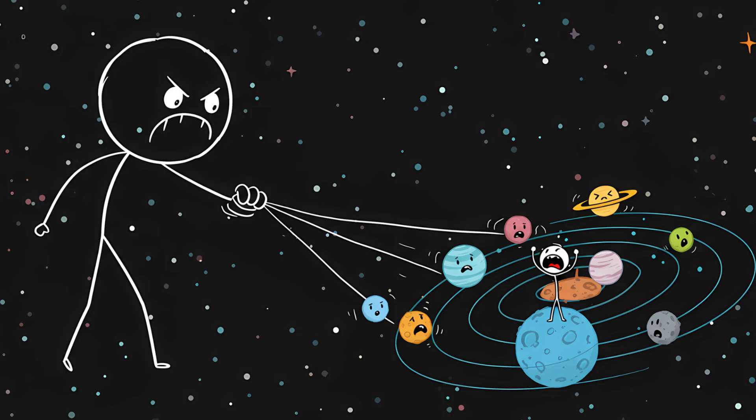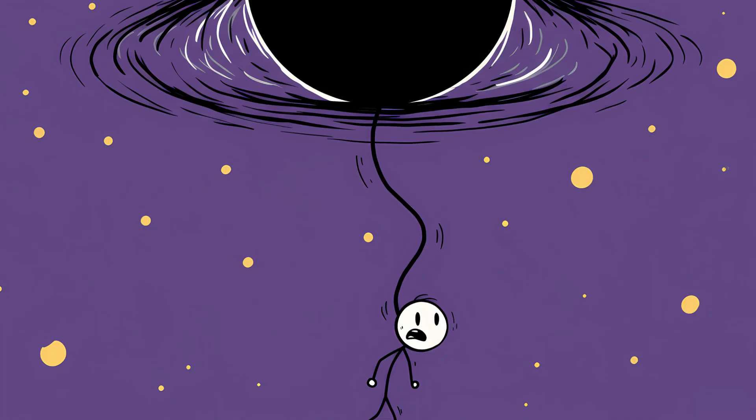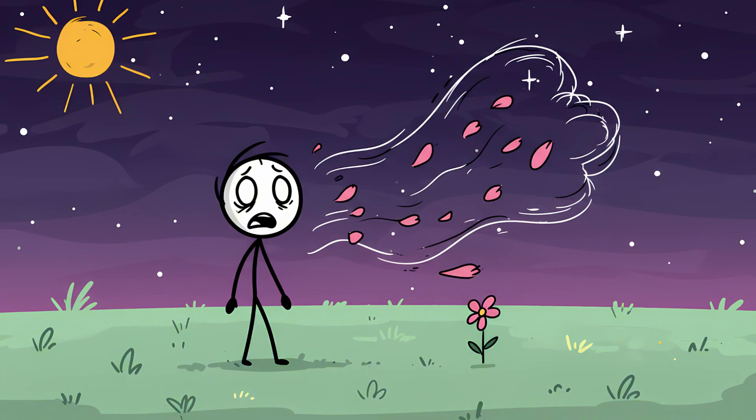Then as it got closer, its gravity would start to tug on the planets themselves, turning our stable, predictable solar system into a chaotic mess. And if it came close enough, well, you know the drill: spaghettification, the ultimate undignified end, where you and your planet are stretched into a thin noodle of atoms and regret. It's cosmic horror at its finest, an invisible giant that you only realize is there when you feel its breath on your neck.